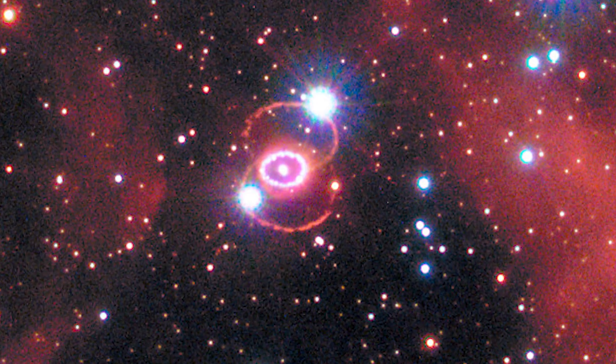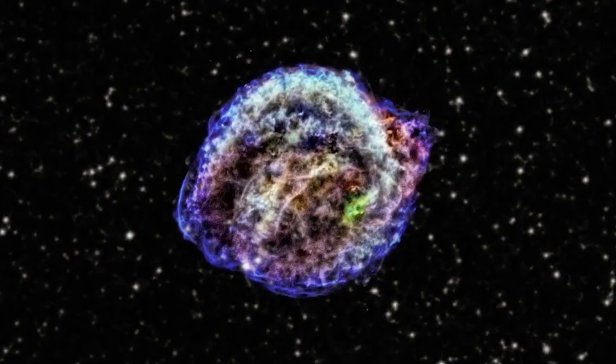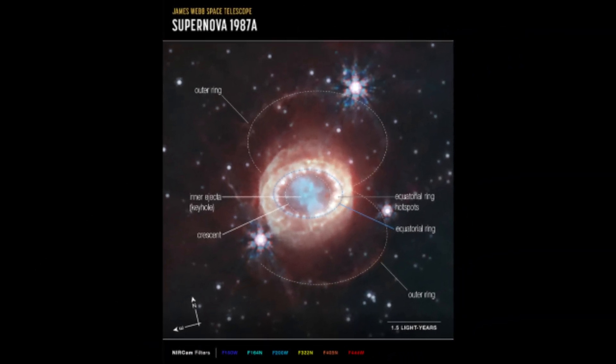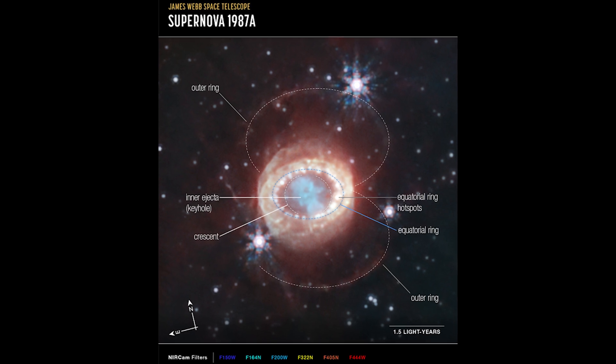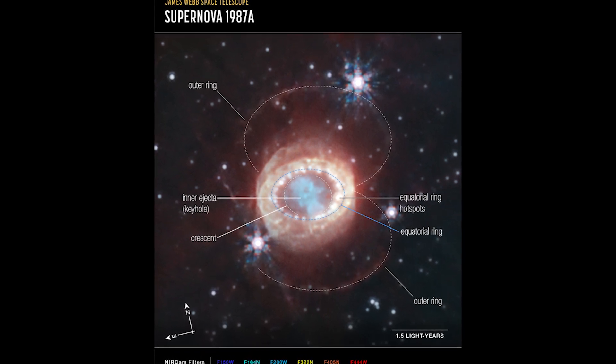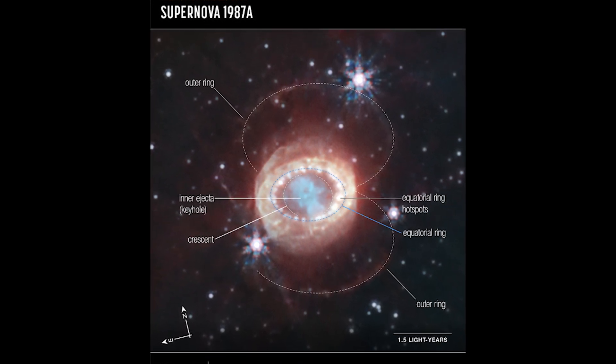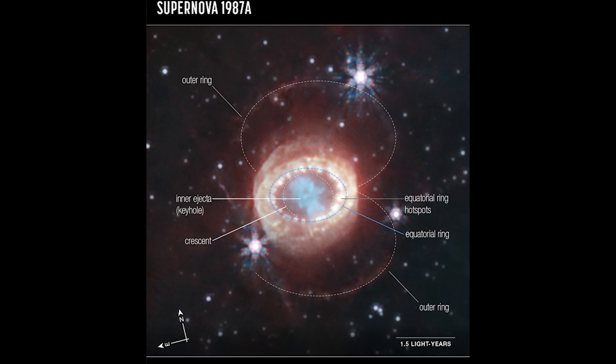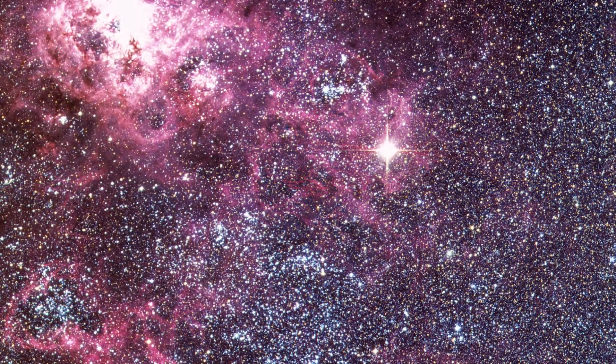It was initially detected on Earth in February 1987 as the first supernova to be seen without telescopes since Kepler's supernova in 1604. SN 1987A was a core-collapsed supernova, meaning a black hole or neutron star emerged from the compacted remnants at its center.